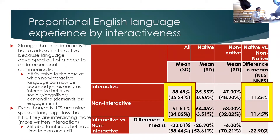Presumably, non-native English speakers prefer written interaction at least in part because it offers them more time for planning and editing — more control over their language — than the ballistic processing required of oral interaction.